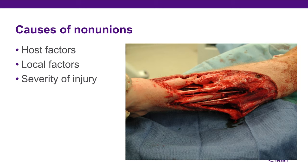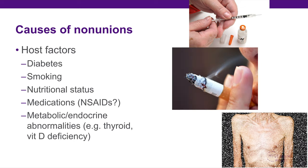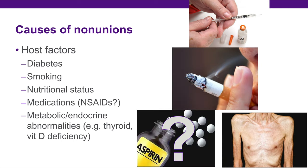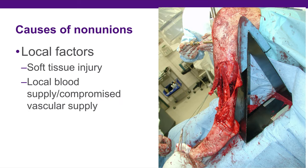What causes non-unions? Multiple factors, including host factors, local factors, and severity of injury — some things you can do something about, some you can't. Host factors include diabetes, smoking, nutritional status, and medications. NSAIDs are still sort of a yes-no; based on lab studies, the dosage that would really be a problem is more than anyone would ever take, but it's still on the list. Also metabolic or endocrine abnormalities such as thyroid abnormalities or vitamin D deficiency.